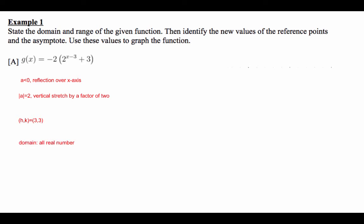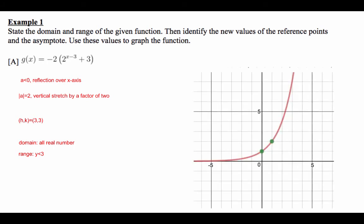And then the domain, as you can tell, in this particular case is all real numbers, but range is y is less than 3. Can you guess why it's less than 3, but not greater than 3? If you mention that it's because the a value is negative, then you're absolutely correct. Okay, guys, let's... Instead of making a table, let's do the transformation.